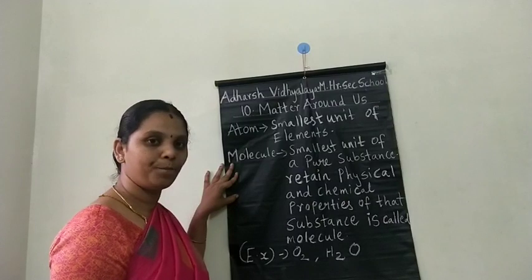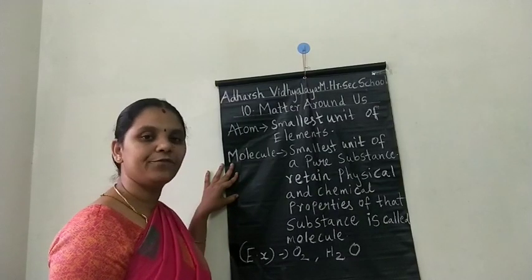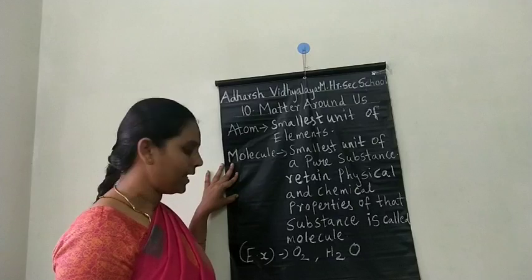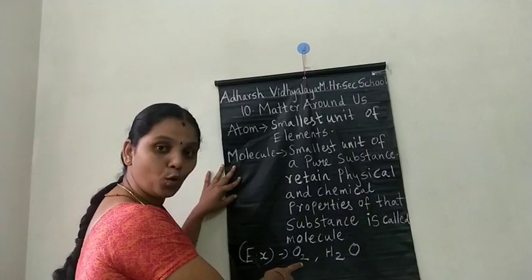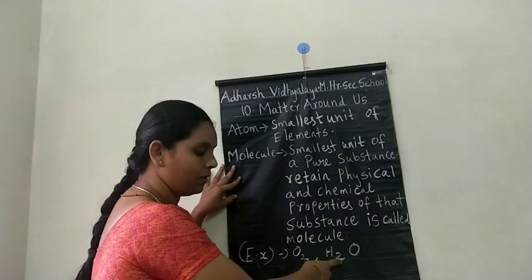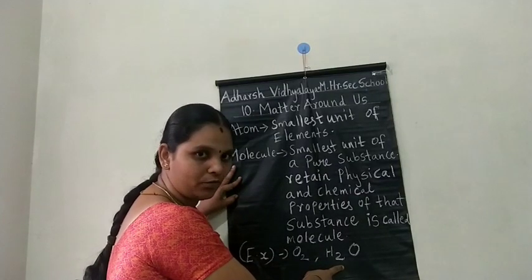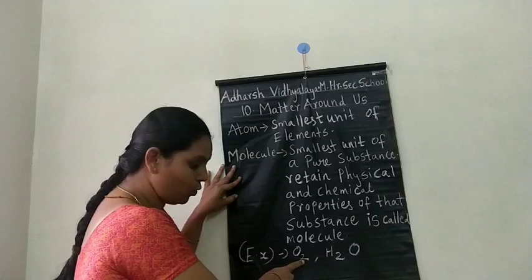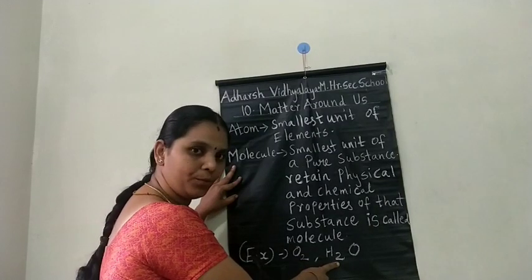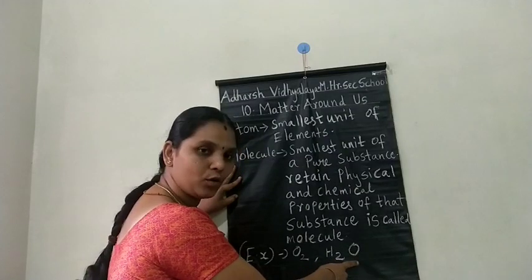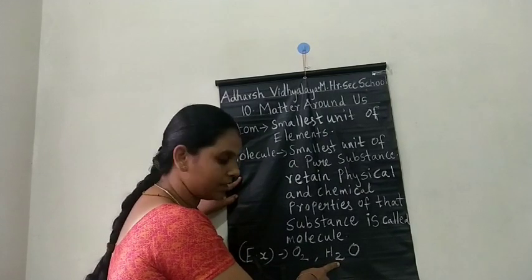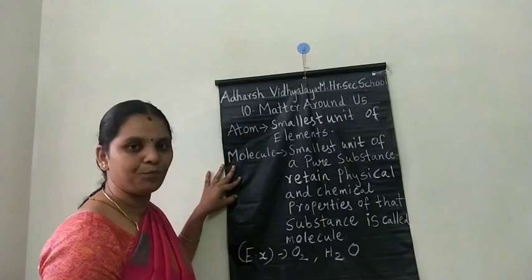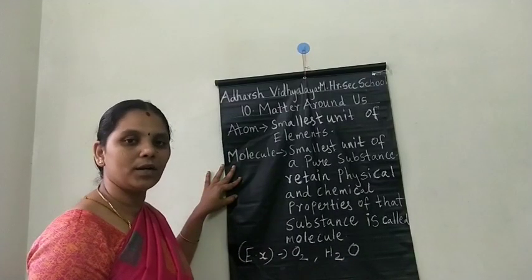In simple terms, if two or more atoms combine together, they form a molecule. For example, O2 is called an oxygen molecule, and H2O is called a water molecule. In O2, two atoms of oxygen are present. In H2O, two atoms of hydrogen and one atom of oxygen are present.